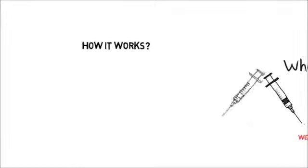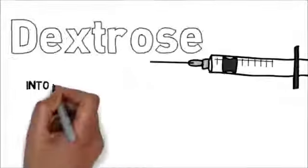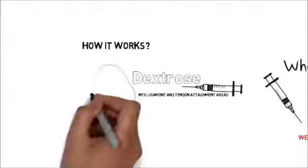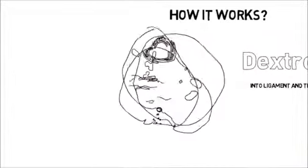But how does it work? Dextrose is injected. This type of sugar is hyperosmolar, meaning that it will remove water from cells at the injection site. Upsetting the delicate balance within the living cells will cause localized tissue trauma.